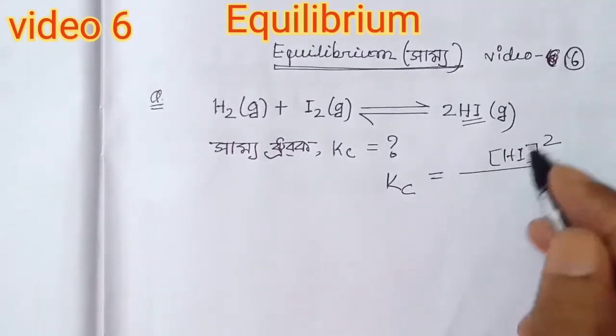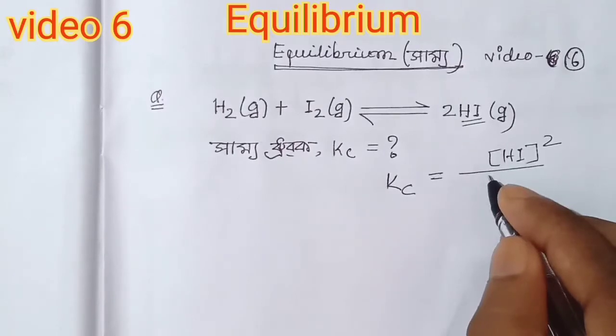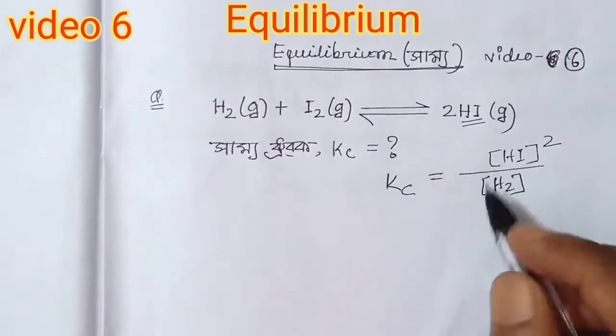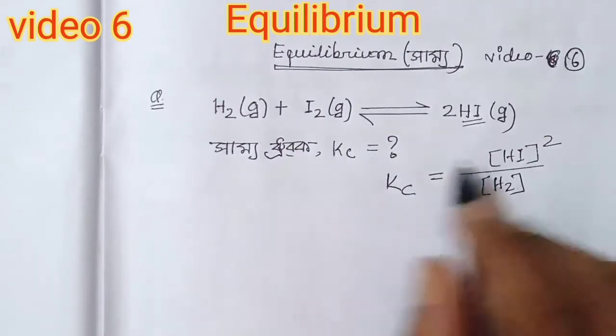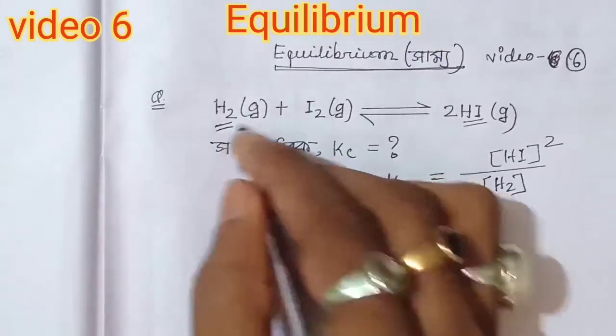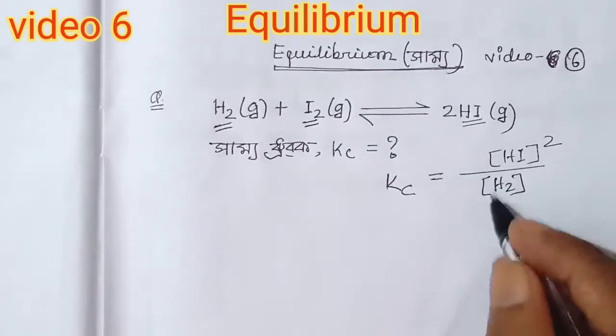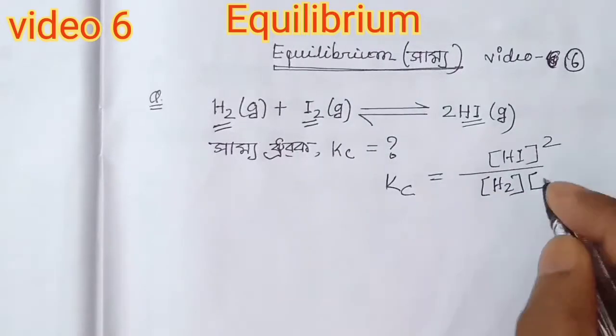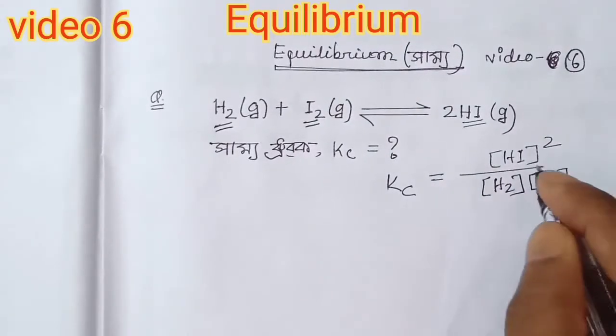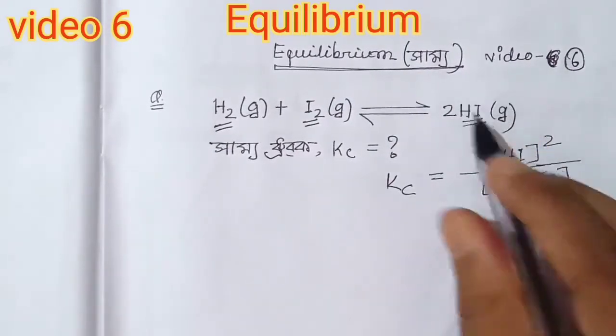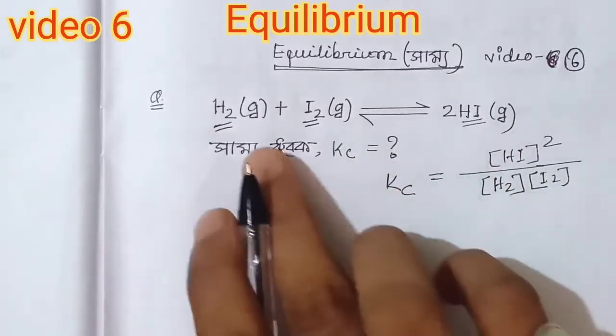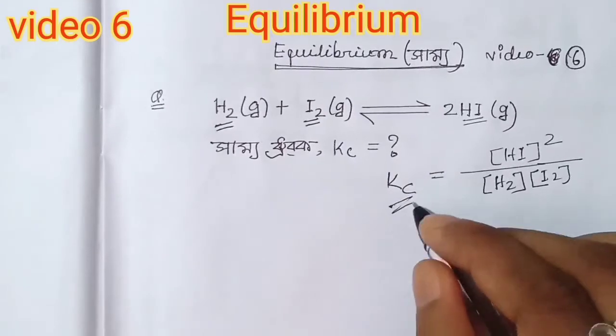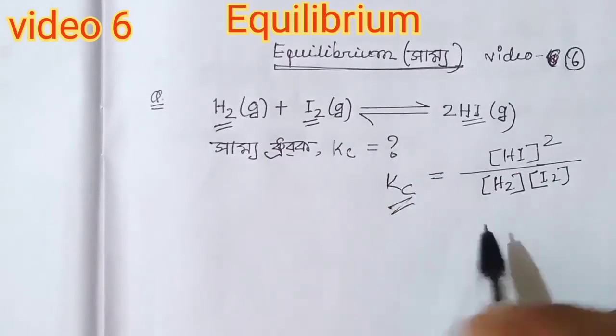Left side, left side. So the left side, it's the concentration of I2, concentration of H2. Concentration divided by - right side divided by left side for the concentration.